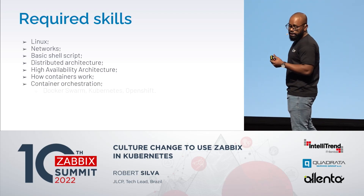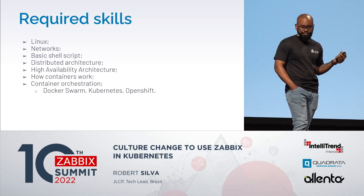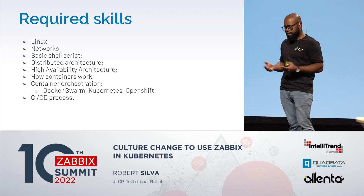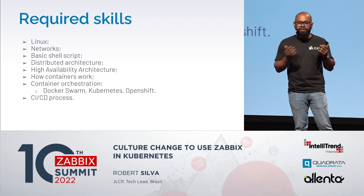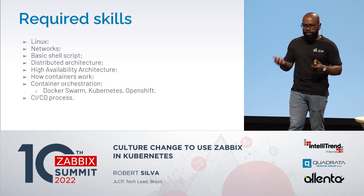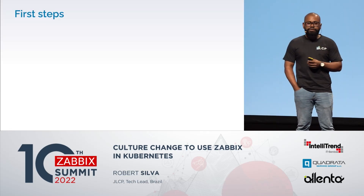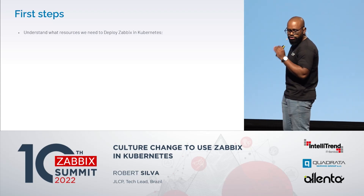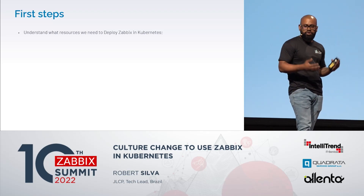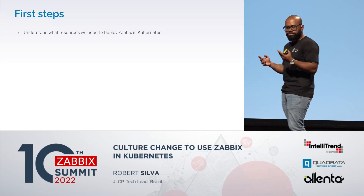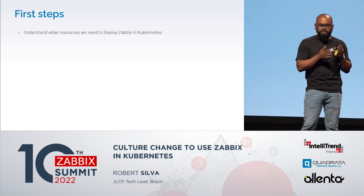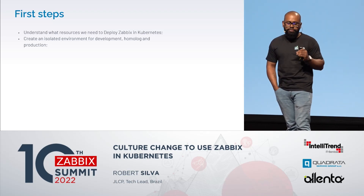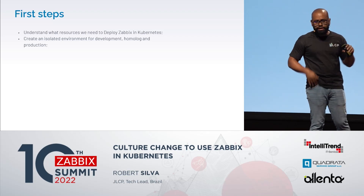Container orchestration tools like Docker Swarm, Kubernetes, and OpenShift are key. CI/CD process is also very important — some components working in Kubernetes may still have manual actions for deploy, upgrade, or rollback, and CI/CD is a good solution. When starting with Kubernetes, you need to understand what resources are required to deploy Zabbix. Kubernetes has components like ConfigMaps, volume secrets, but what do you specifically need for Zabbix? You also need to create a solid environment for development, homologation, and production — separating these environments is very important.